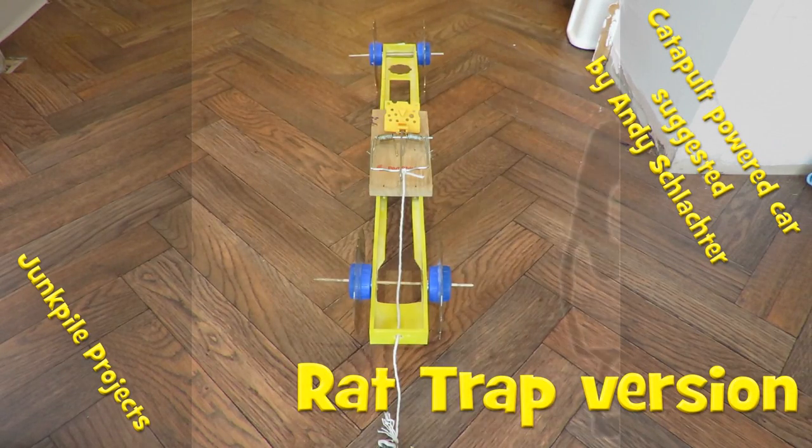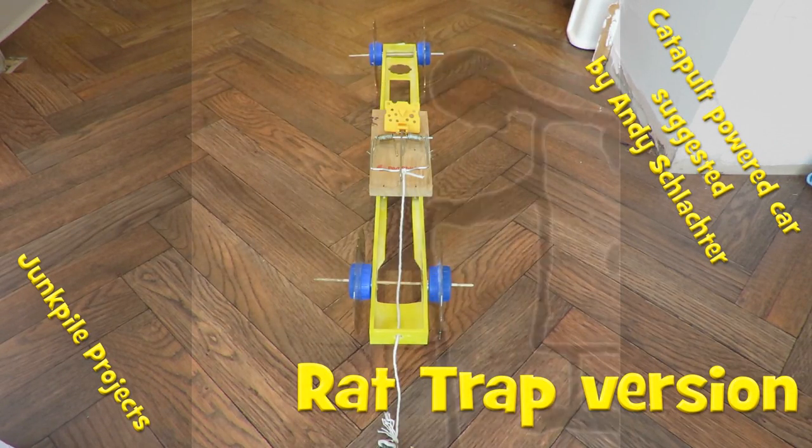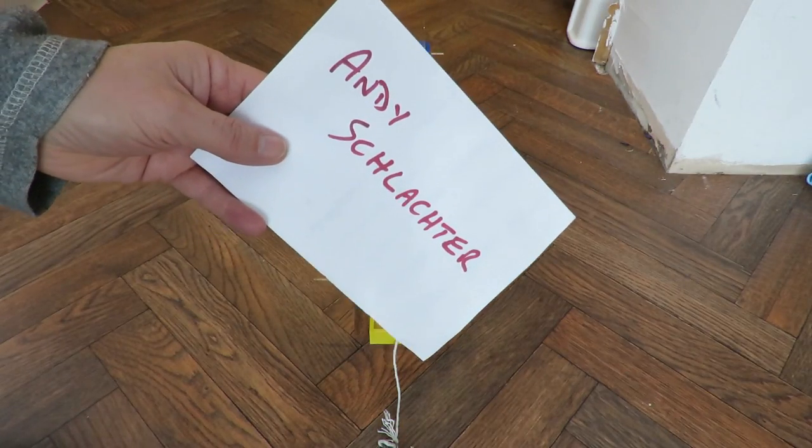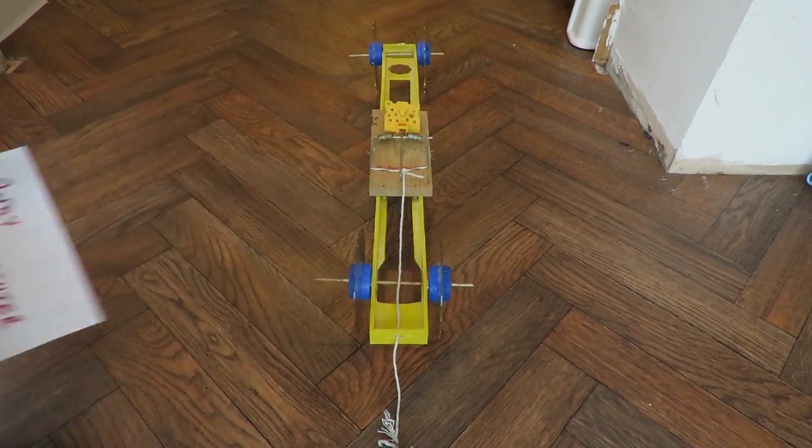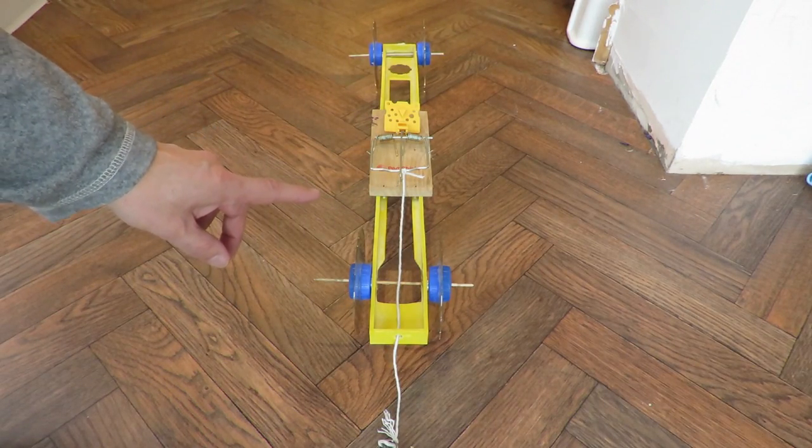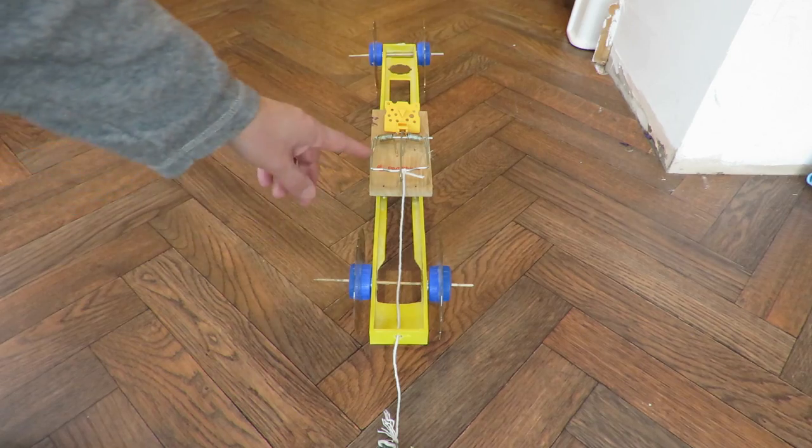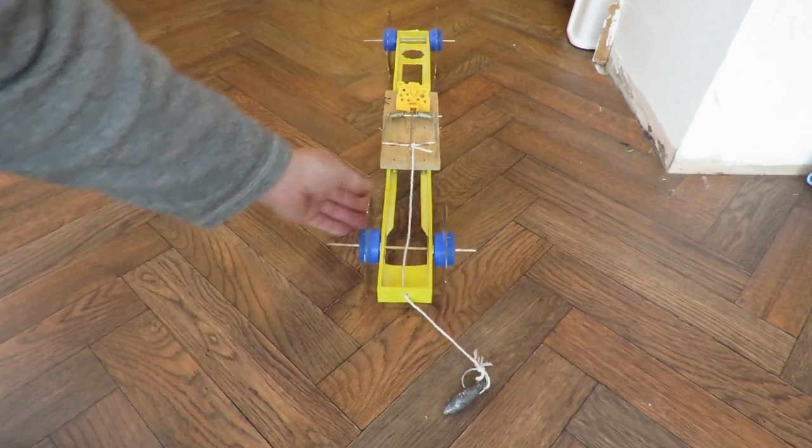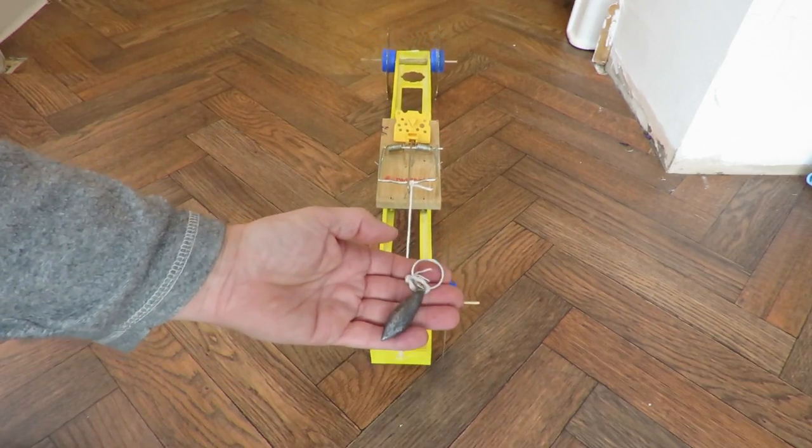Hi guys, this is an alternative implementation of a suggestion from Andy, still using the same chassis and wheels, but this time I'm using a rat trap to pull the weight forwards.